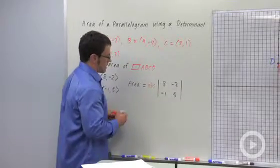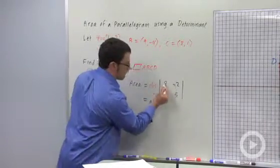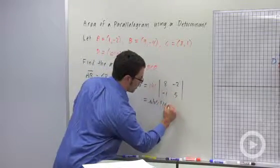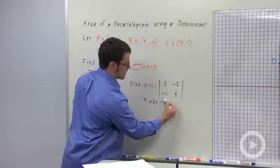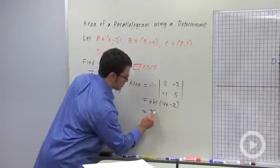Okay, so let's calculate this area. It's the absolute value of 8 times 5, which is 40, minus negative 2 times negative 1, which is 2. So that's the absolute value of 38, which is 38.